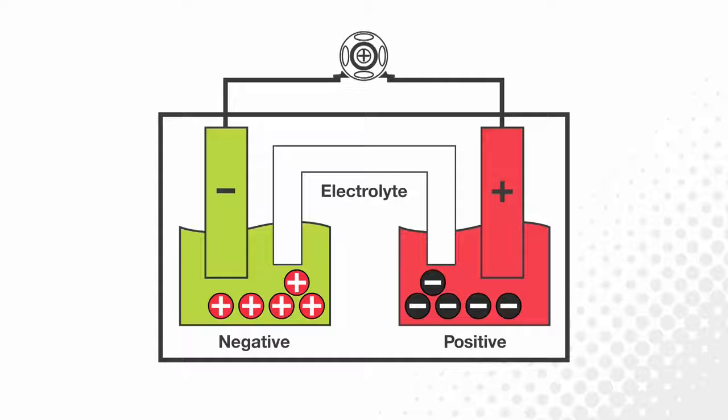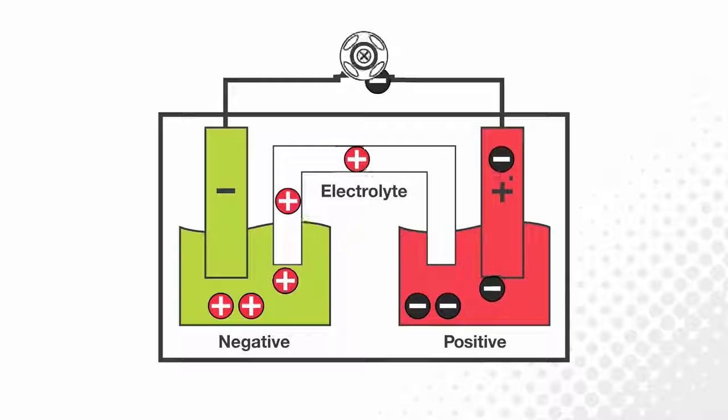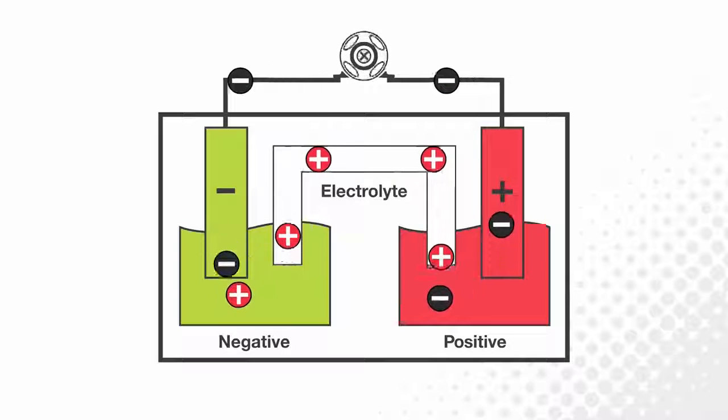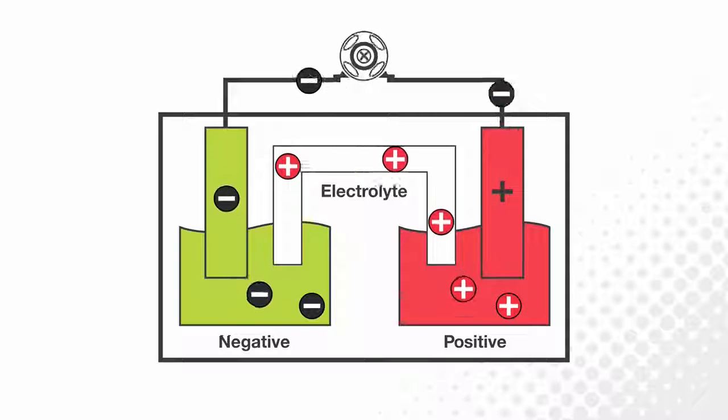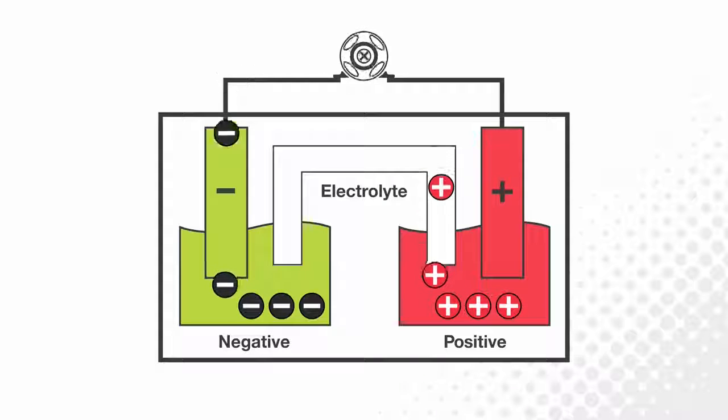This process is reversed during the battery charge cycle, where the ions are driven out of the positive plates and back into the electrolyte, ready for the next discharge cycle requirement.